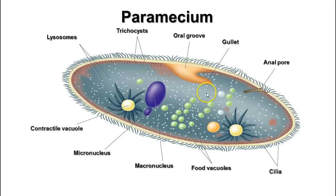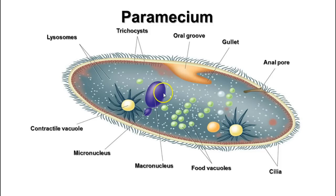There are two nuclei in paramecia: a macronucleus and a micronucleus. The macronucleus is like the reserved copy of all the genes and has multiple copies of the chromosomes, serving as the working copy. These are single-celled organisms that don't have specialized cells to do different jobs, so they have to do everything in one cell. It makes sense that they would need multiple copies of the chromosomes in order to do all those different jobs.